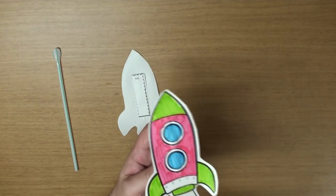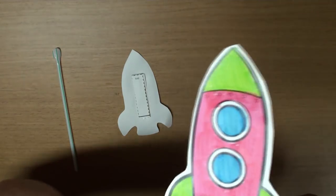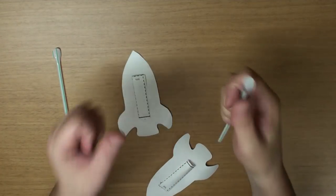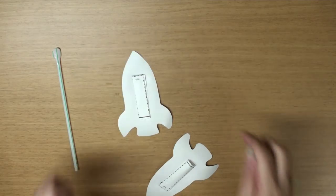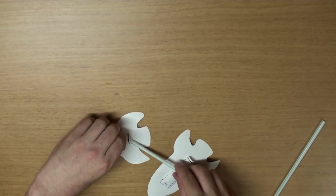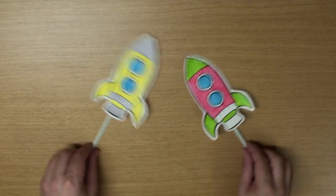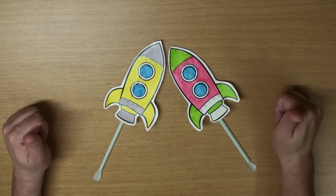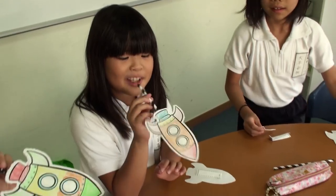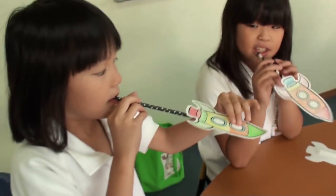Now we need some straws. Put the straw in. Blow and... Wow! That was cool! These little rockets are a lot of fun. You can play games to see who can shoot them the farthest. Or just have fun by yourself. My kids love making these.